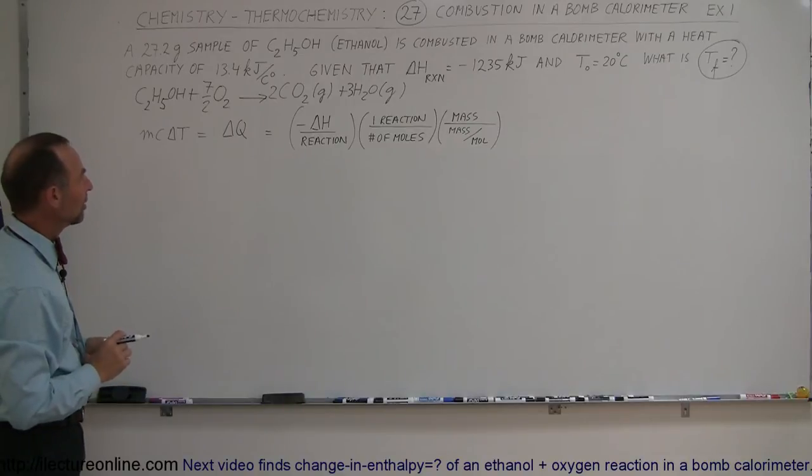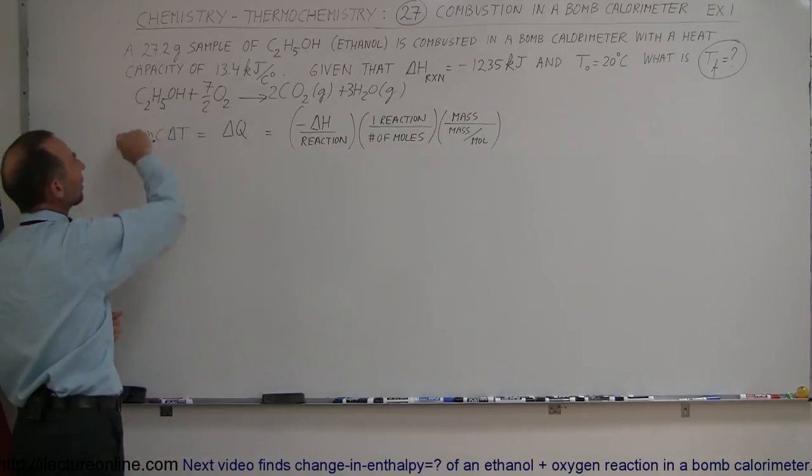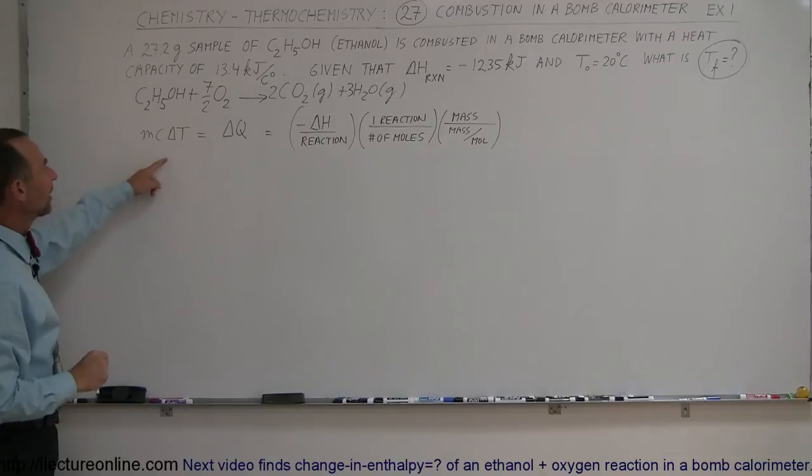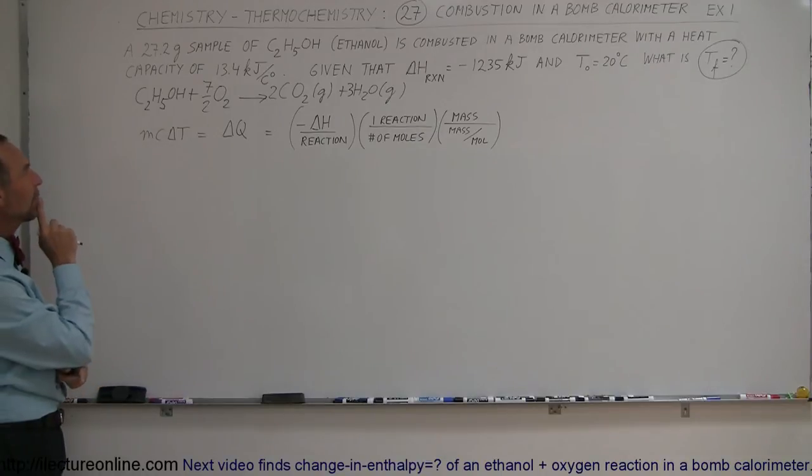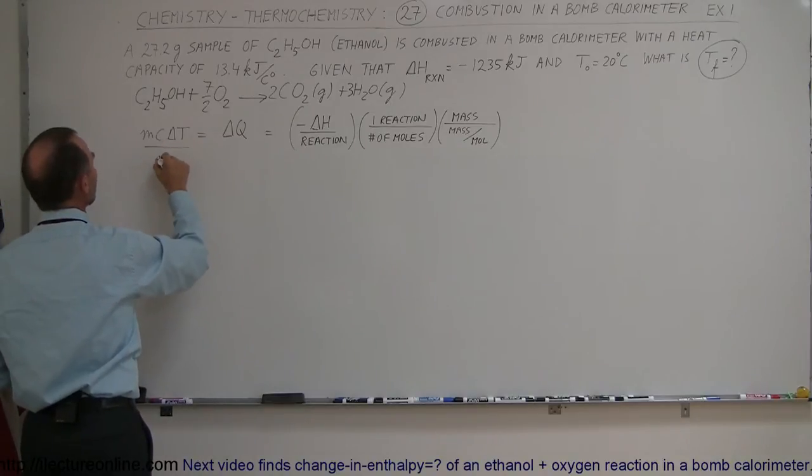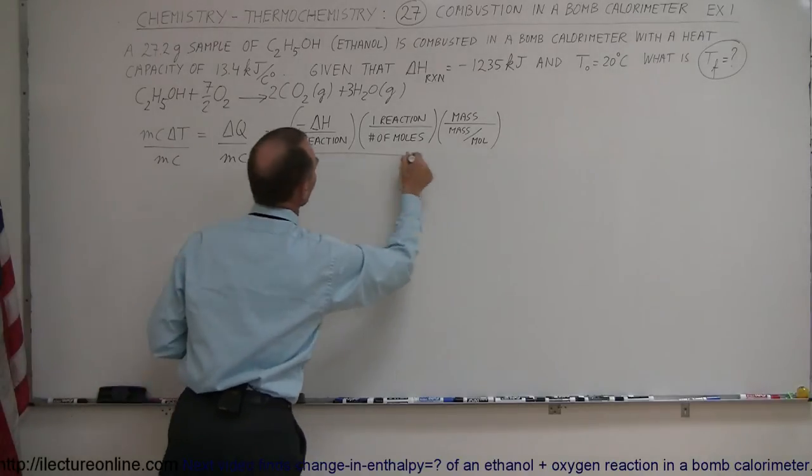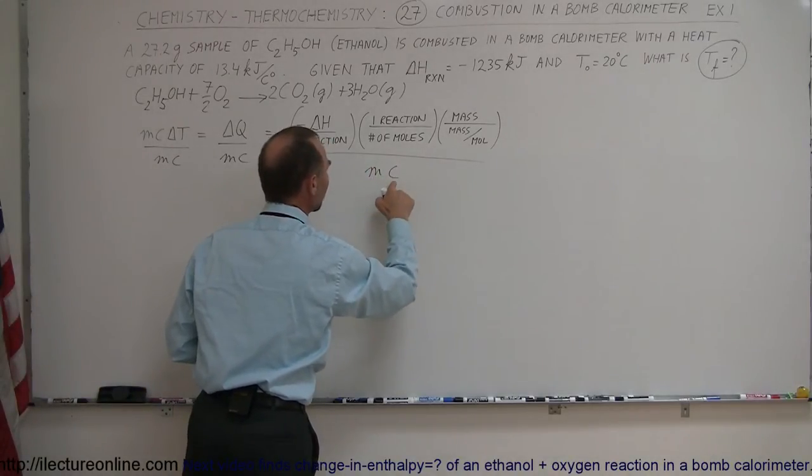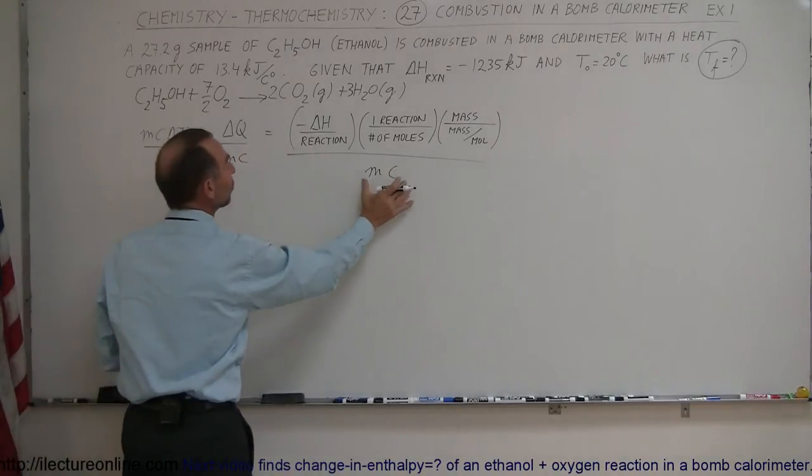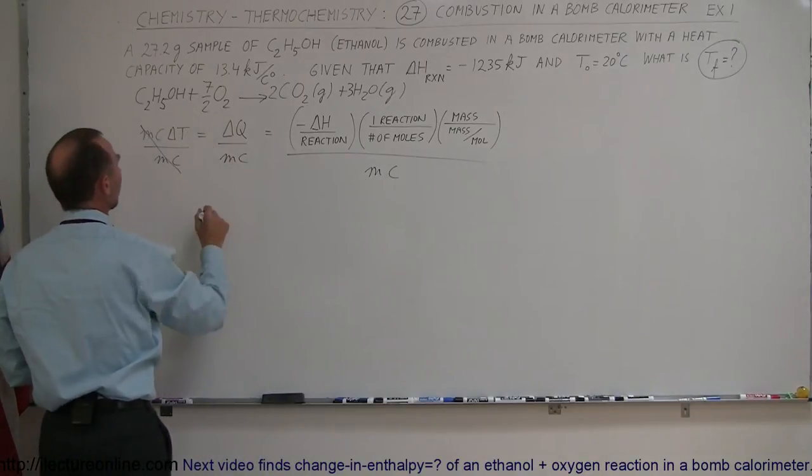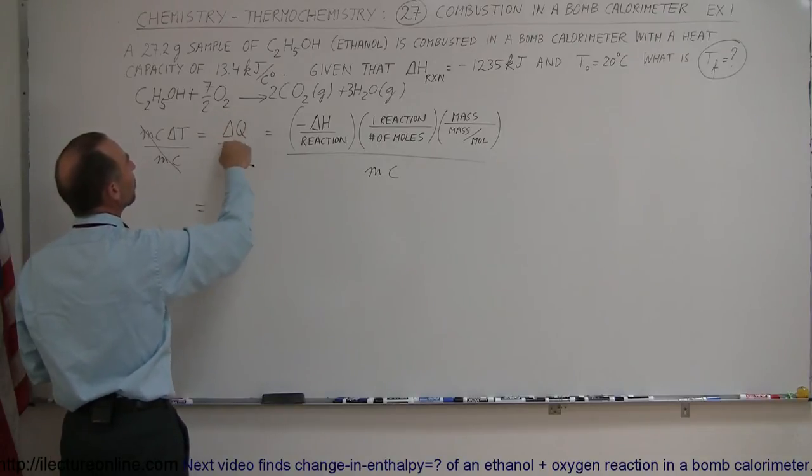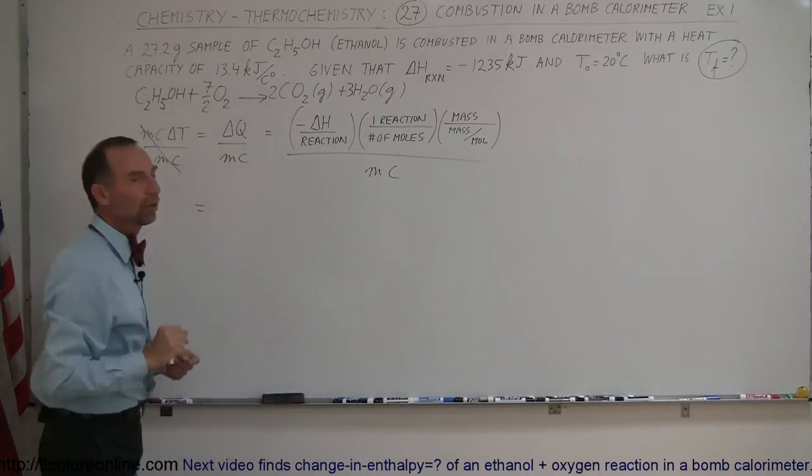Now that we have this reaction written down, we realize we only have one mole of ethanol in the reaction, so this will just be one. We're not looking for MC delta T, we're looking for delta T, which means we want to divide both sides by MC. This divided by MC, and MC is the mass times the specific heat of the calorimeter, which ends up being the heat capacity of the calorimeter.